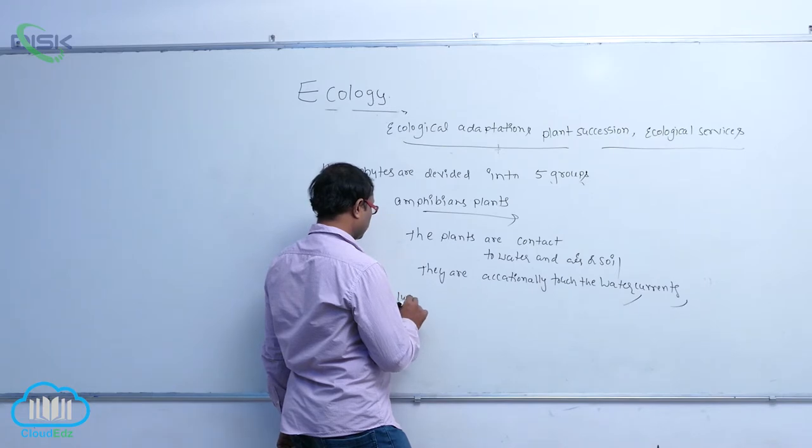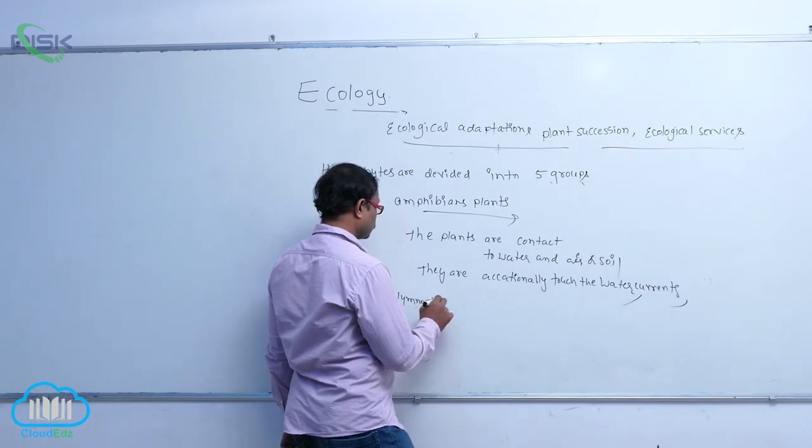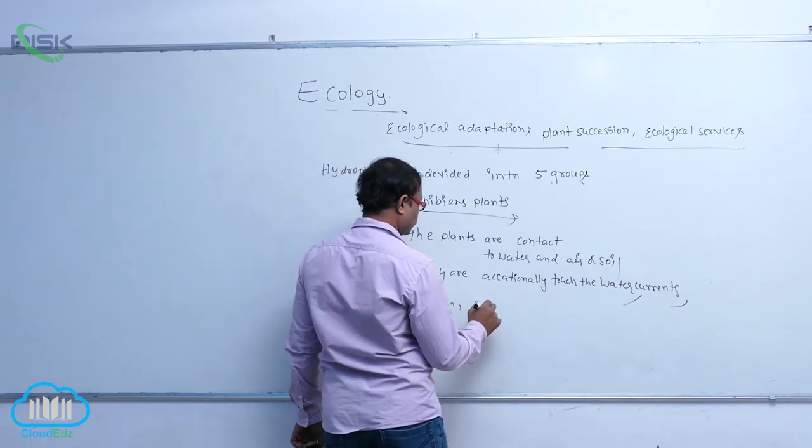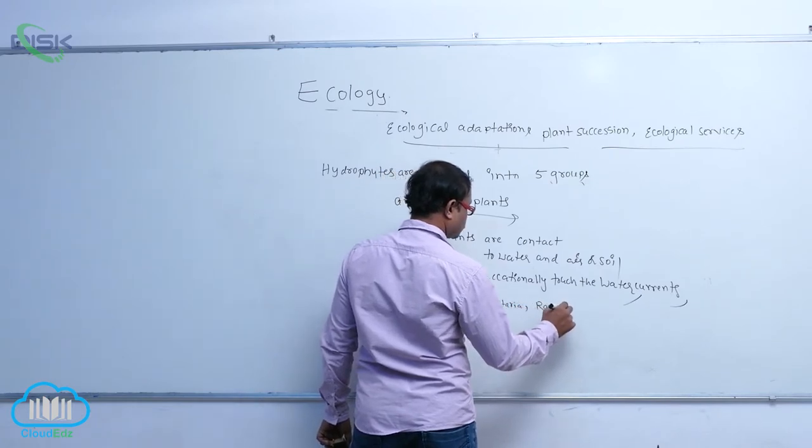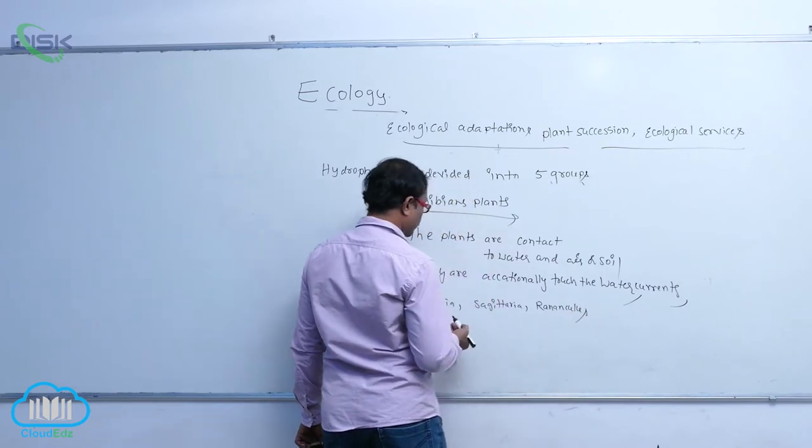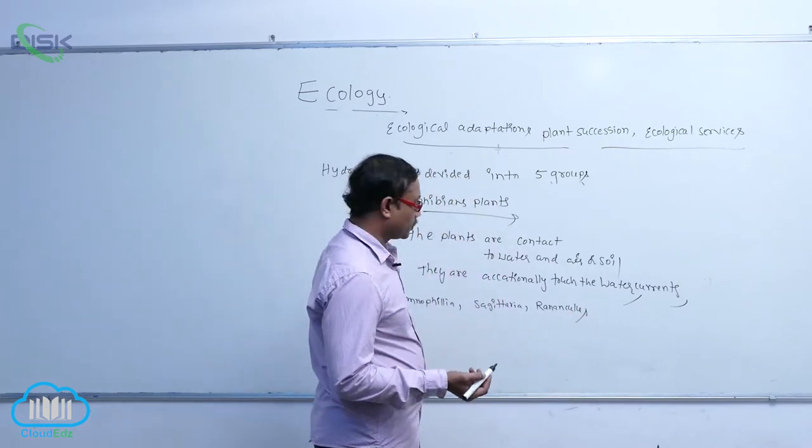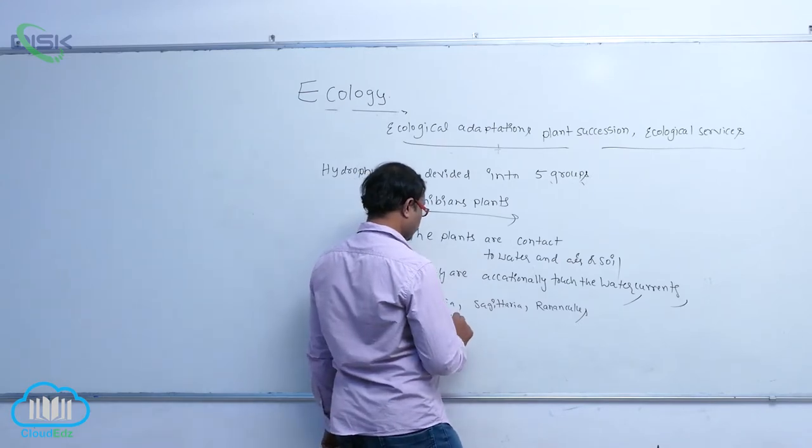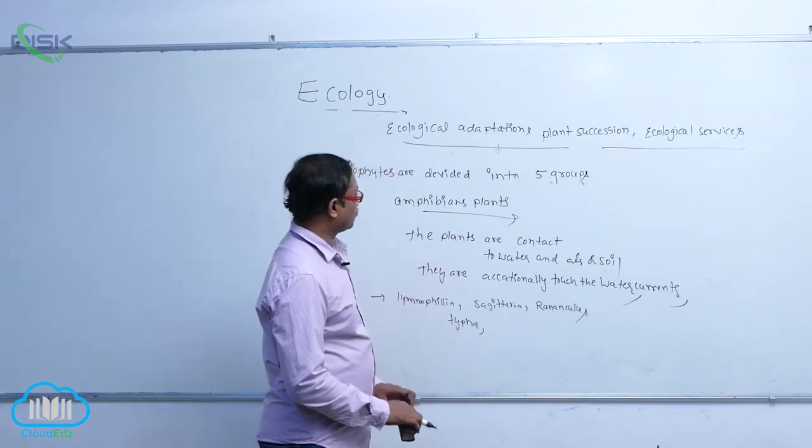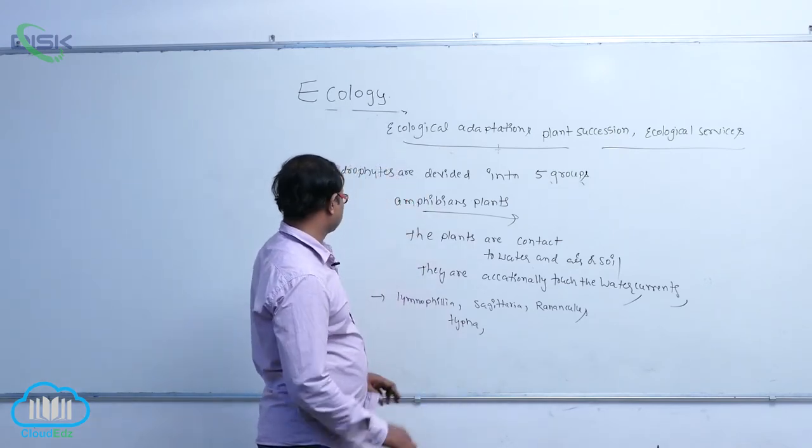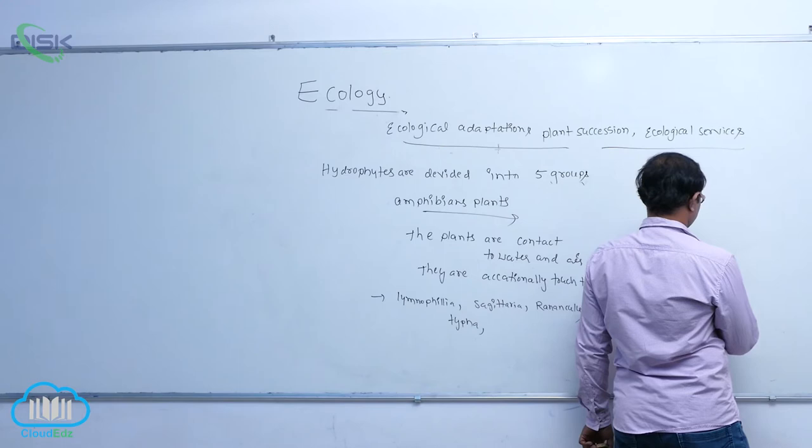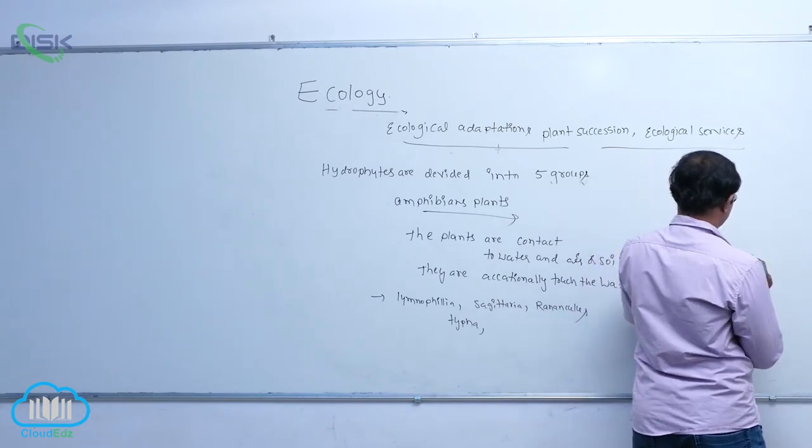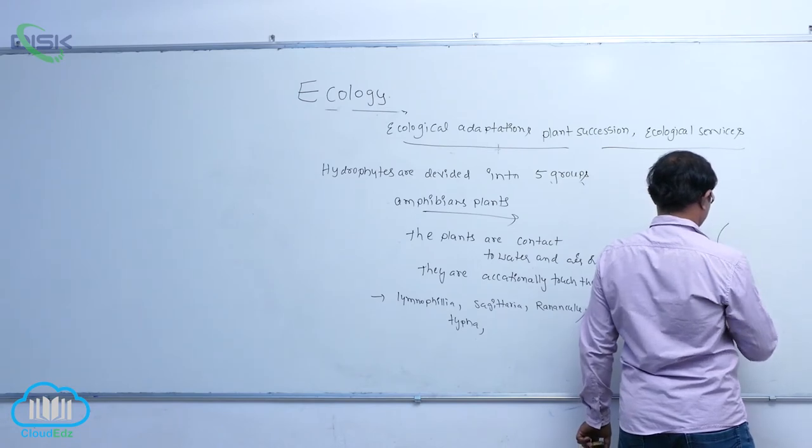So these amphibious plants are Limnophila, Sagittaria, Ranunculus. These plants are known as amphibious plants. For example, amphibious plants show two types of plants.